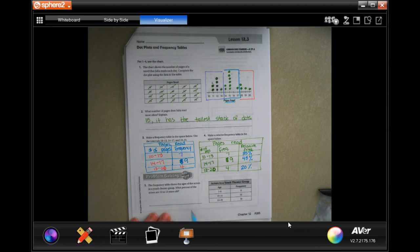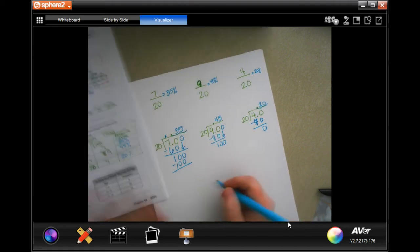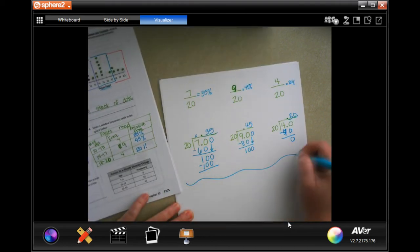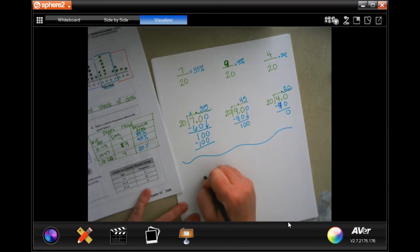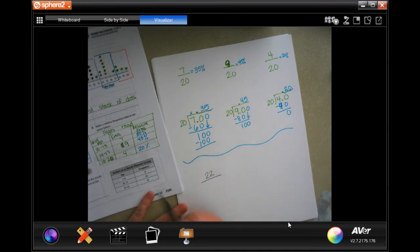The frequency table shows the ages of actors in a youth theater group. What percent of the actors are 10 to 12 years old? So I'm going to draw a line right here and we're going to use the same paper, so don't get confused. So 10 to 12, there's 22 of them out of, there's 8 plus 22 is 30, plus 10 is 40. So out of 40.